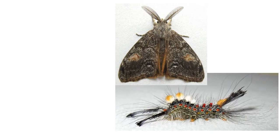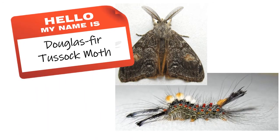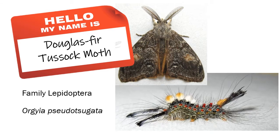This insect is called the Douglas fir tussock moth. Being a moth, this insect is in the family Lepidoptera. Its scientific name is Orgyia pseudotsugata.